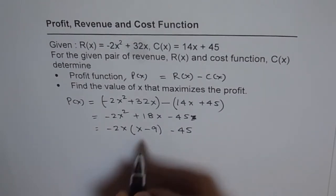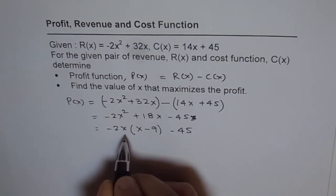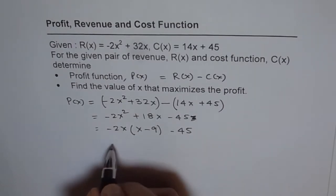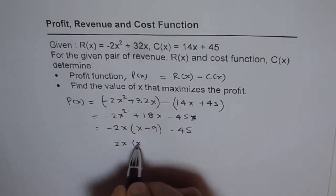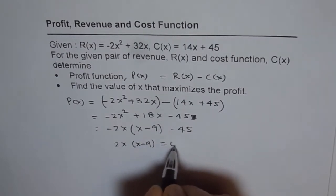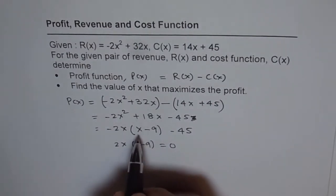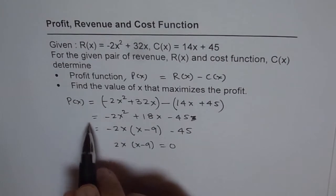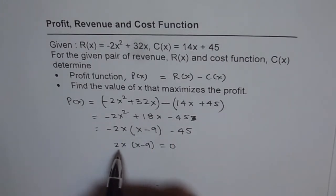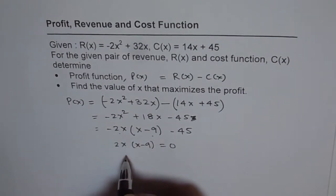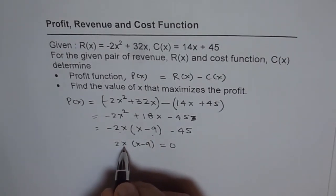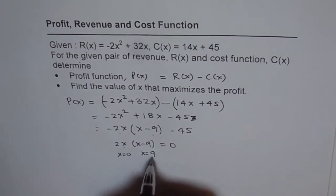Now, from here, the maximum will be at x equals... we can equate 2x times (x - 9) to 0. Because, the vertex of the profit function will be same as that of the one with this function. So, it is at... this is 0 at x equals to 0, and this is 0 at x equals to 9.